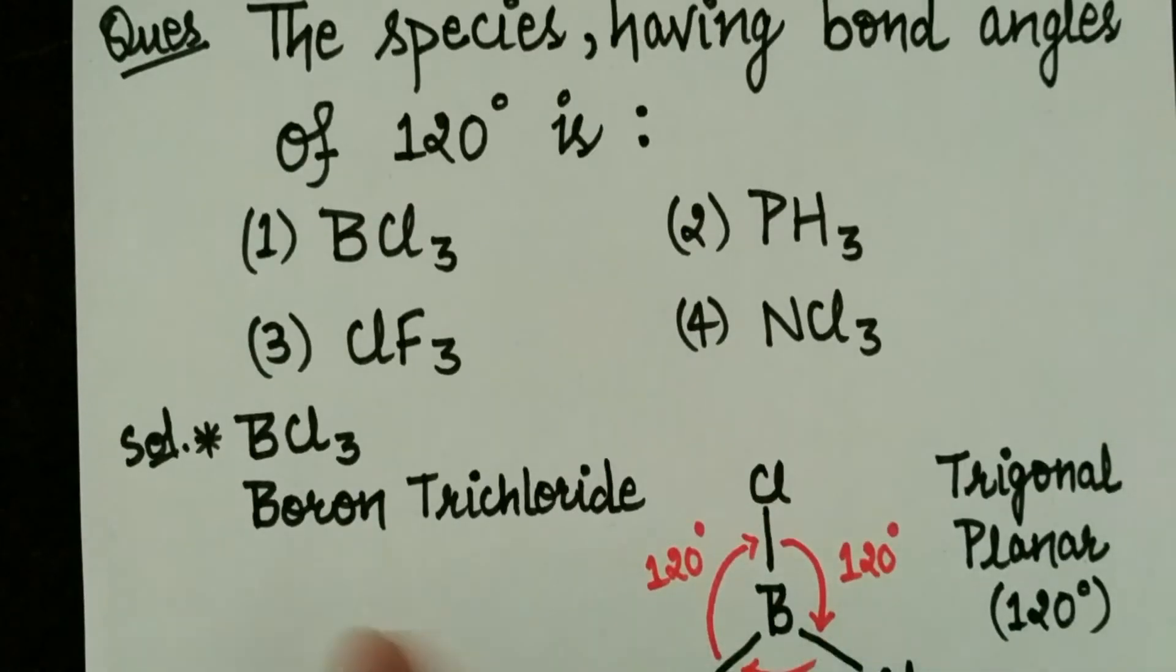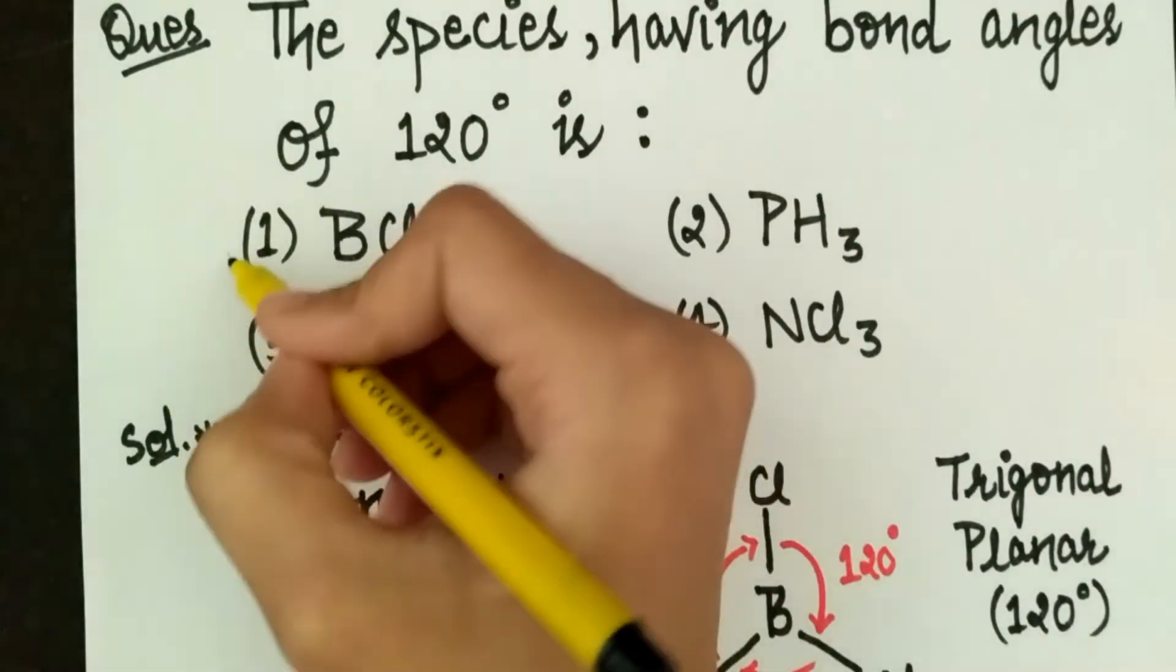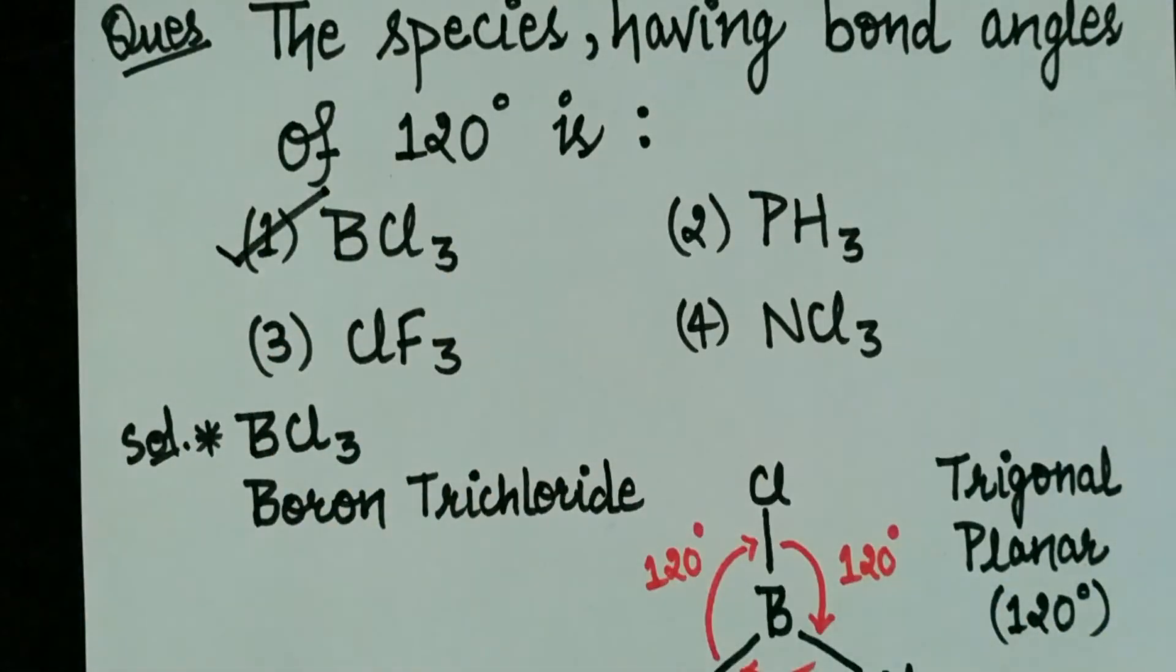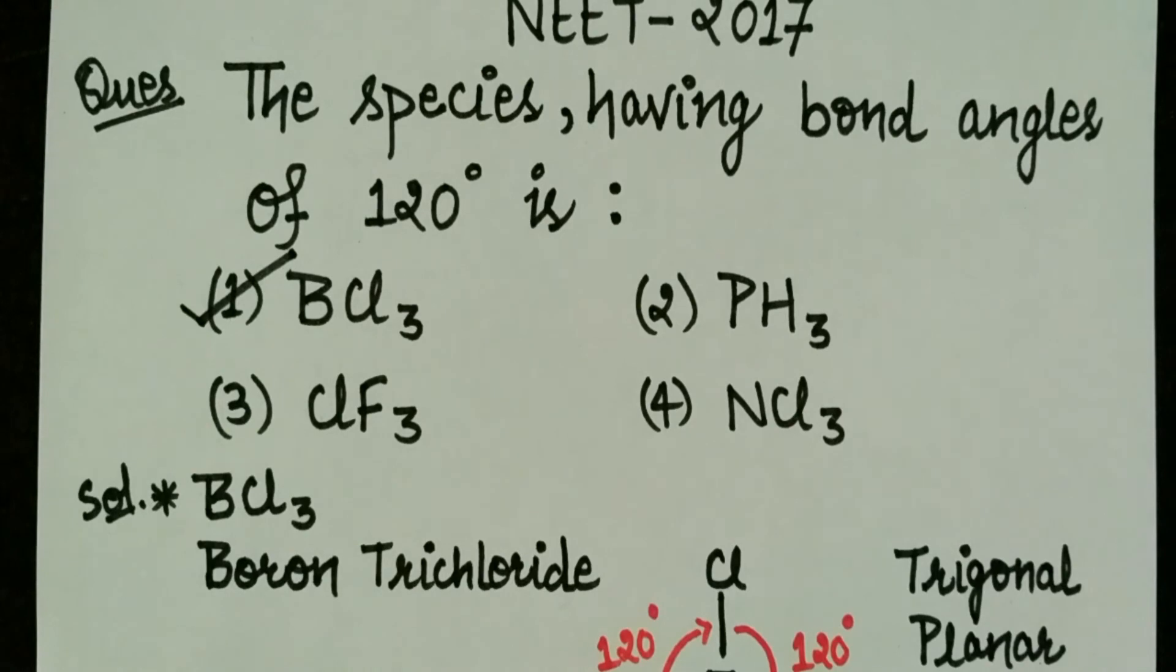So here we conclude that BCL3 has 120 degrees of angle. So the right option is the first option. Thank you for watching my video and please subscribe to my channel.